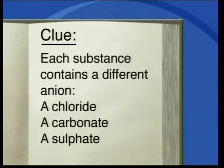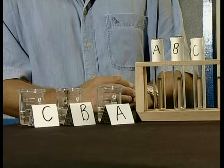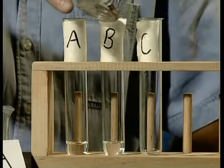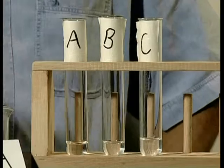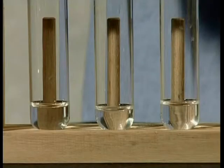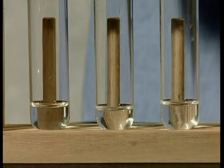Now we need to identify the anions. From our clue we need to find out which one is our chloride, which one is our sulfate and which one is our carbonate. First we dissolve each salt in distilled water to form a solution. We will use small amounts of these solutions to test for the different anions. For each test we must use clean dry test tubes and label them A, B and C. You will notice that all the solutions are colourless. If the test tubes are not labelled we could easily become confused about which solution we are testing.